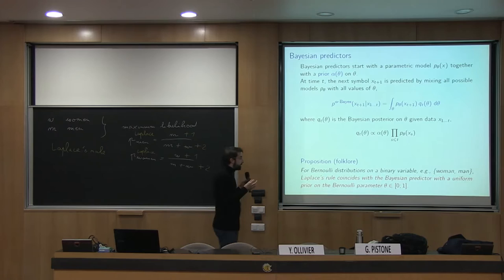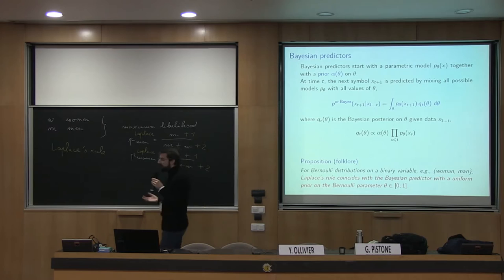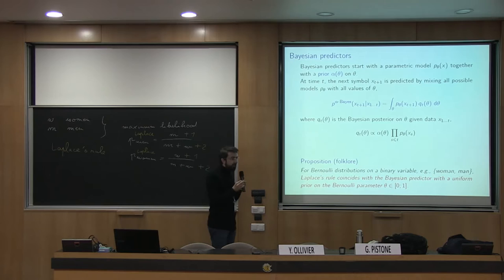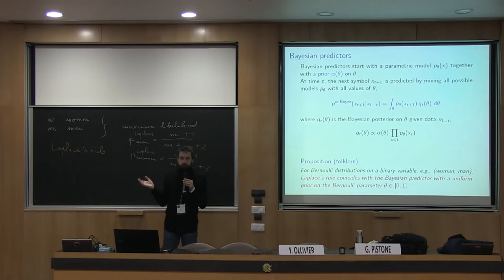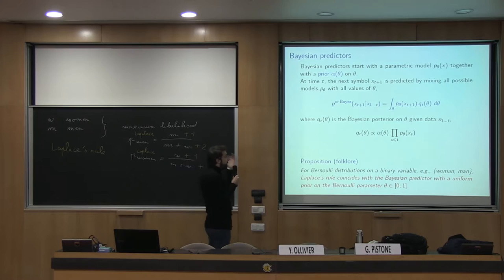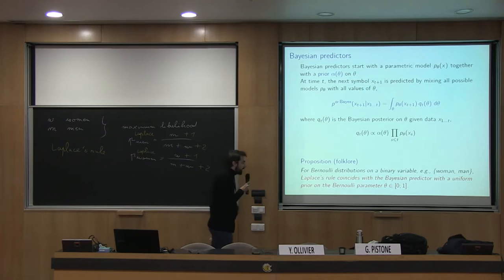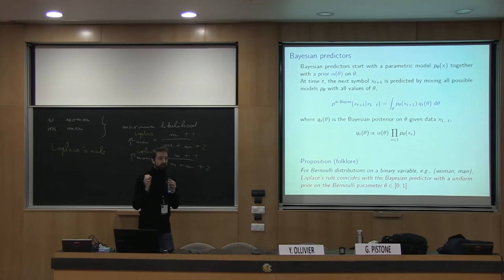In this case the Bayesian predictor is very easy to compute because Laplace's rule is very easy to implement. But this is extremely specific to this particular case of Bernoulli or multinomial distributions. In general, it's not true that Bayesian predictors amount to such a simple rule — in more general cases you have to deal with this integral and with the prior.